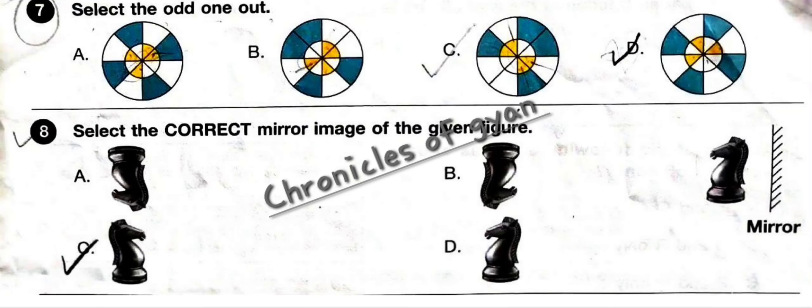Question 8: Select the correct mirror image of the given figure. The mirror is on the right side, so the correct mirror image will be option C.